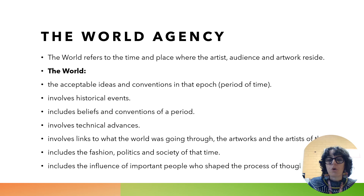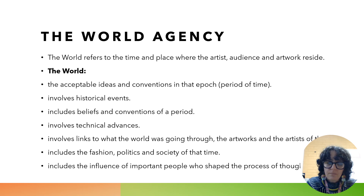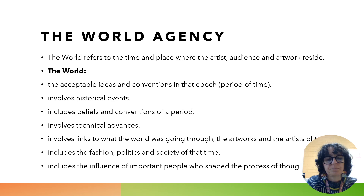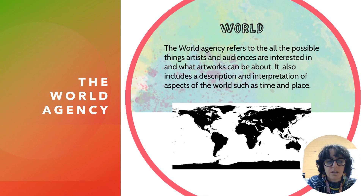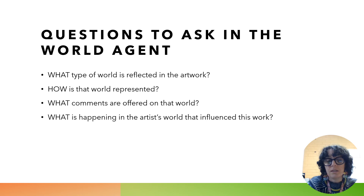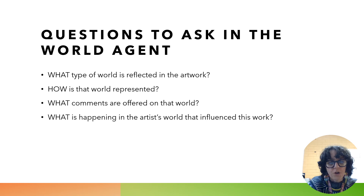The World Agency involves links to what the world was going through and the artworks and artists of that time. It might include fashion, politics and society of that time, and the influence of important people who shaped the processes of thought and ideological beliefs that exist at that time. The World Agency refers to all the possible things artists and audiences are interested in and what artworks can be about — including the description and interpretation of aspects of the world such as time and place. Questions to ask include: What type of world is reflected in this artwork? How is the world represented? What comments are offered on that world? What is happening in the artist's world that has influenced this work, and can I see those things being represented?